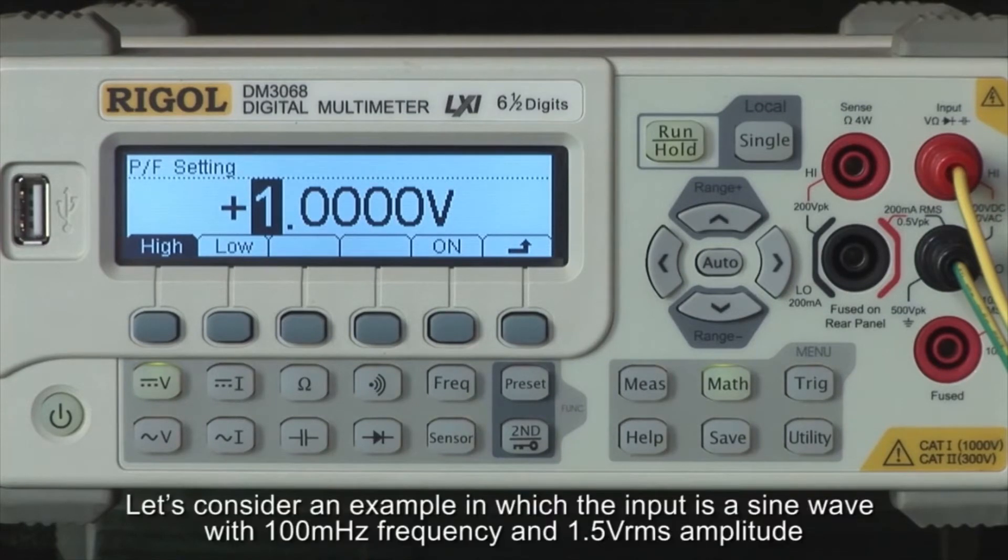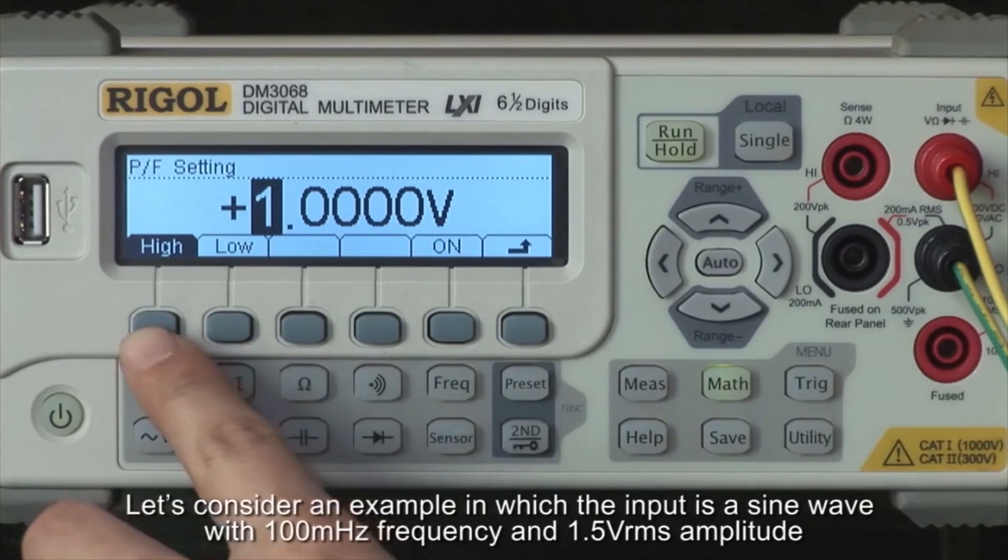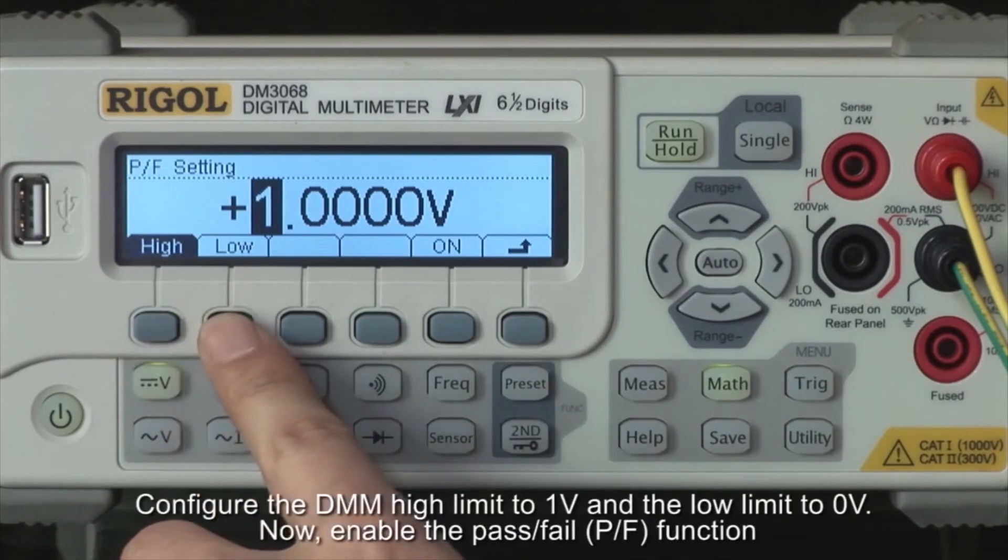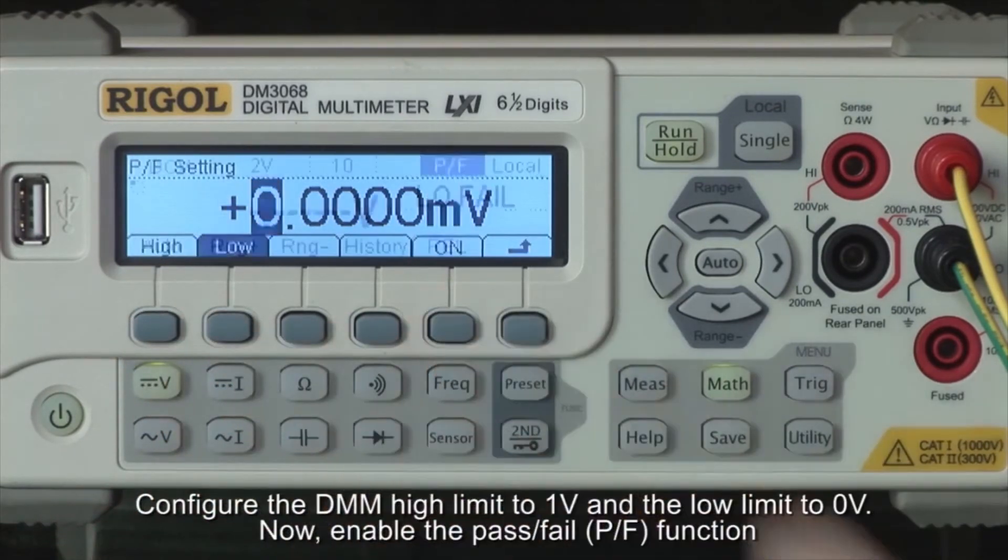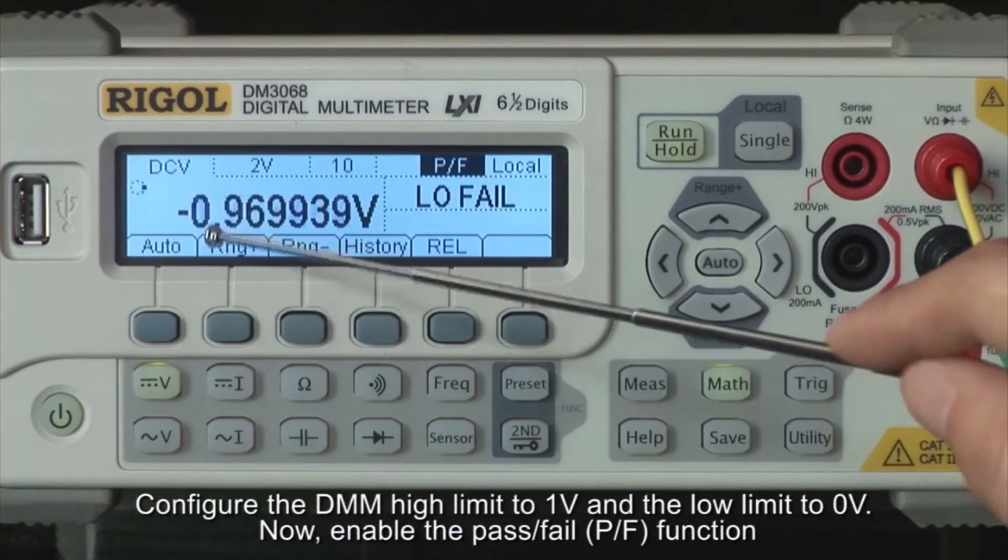Let's consider an example in which the input is a sine wave with 100 millihertz frequency and 1.5 volts RMS amplitude. We can configure the DMM high limit to 1 volt and the low limit to 0 volts. Now enable the pass-fail function.